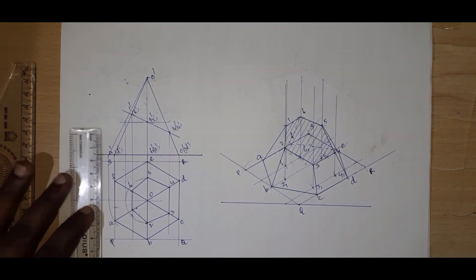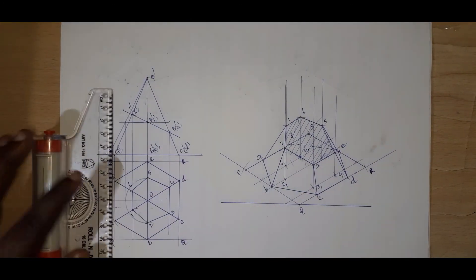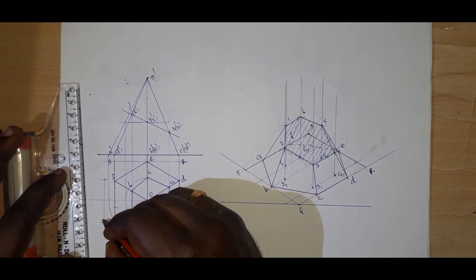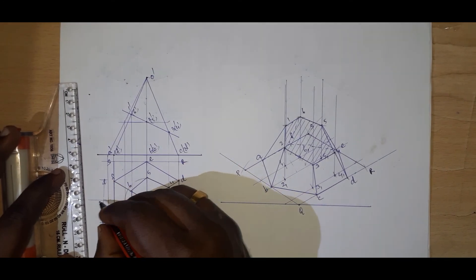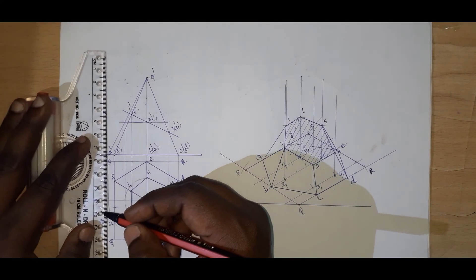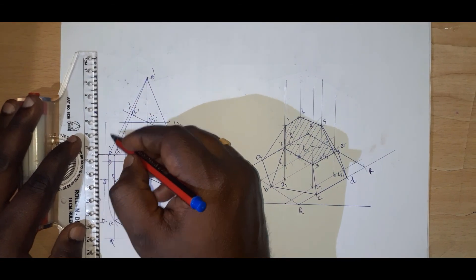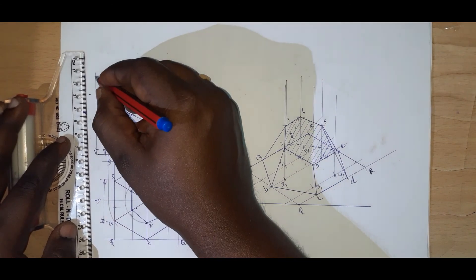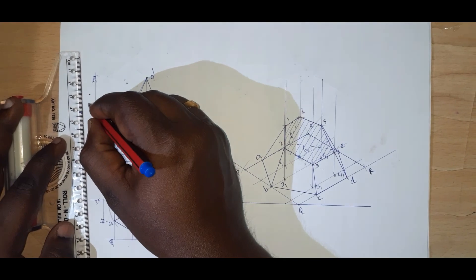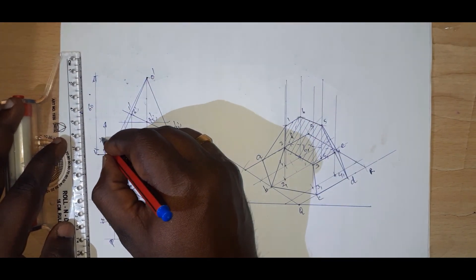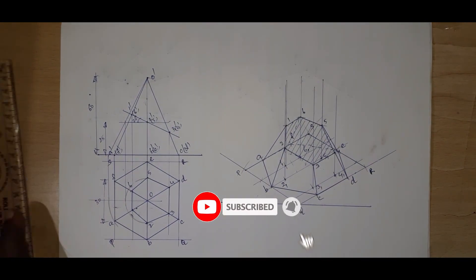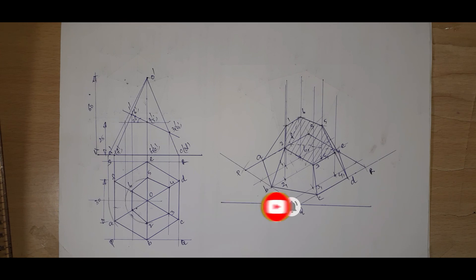The cut section is hatched. Dimensioning is added: 30mm for the base side, 25mm for the cutting plane height, 60mm for the total axis height, and 25 degrees for the cutting plane inclination. This completes the isometric projection of the hexagonal pyramid with section.